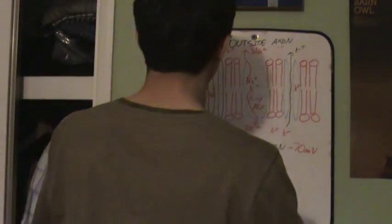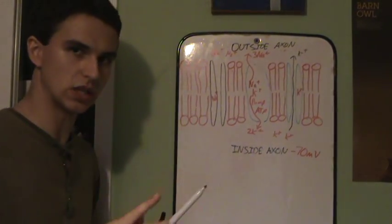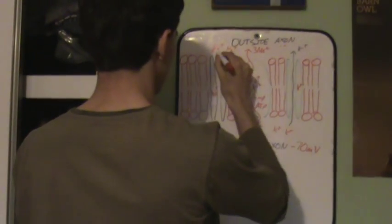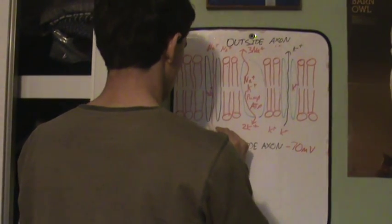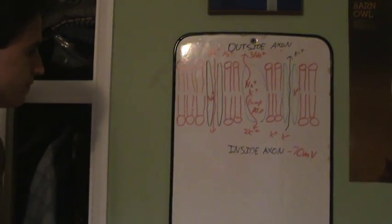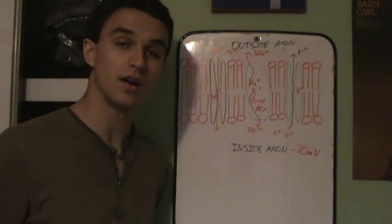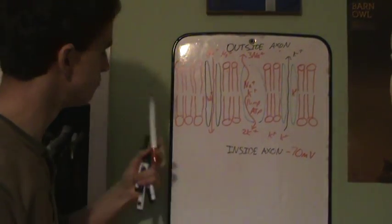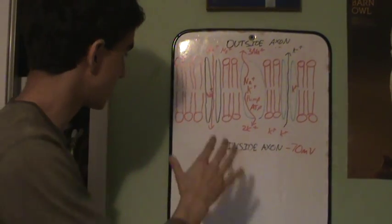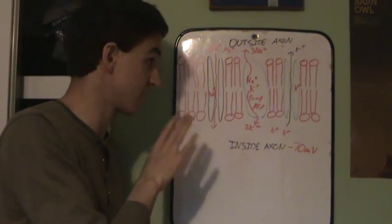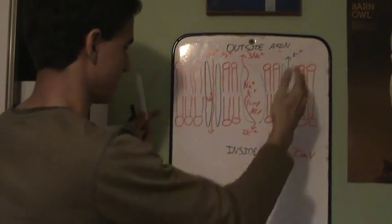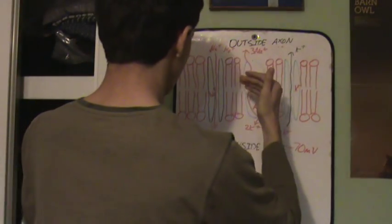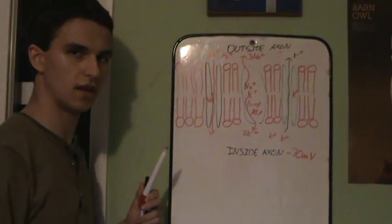So sodium ion channels open. Hurrah! So sodium ions begin to diffuse in naturally. Now no energy is required for diffusion because they're moving along the concentration gradient. So they diffuse along. So sodium ions are positive, so the inside of the axon gets more and more positive. And as more sodium ions diffuse in, that stimulates more sodium ion channels further along the membrane or this section of the membrane to open. So this is called depolarisation of the axon.